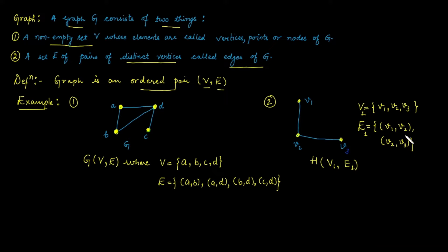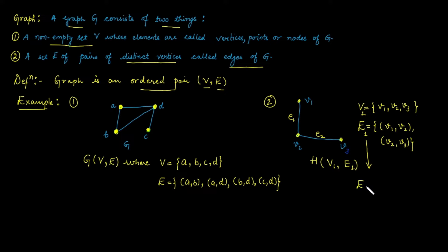Moreover, the edge set can also be represented in a second form when names are given to the edges. Suppose this edge is written as E1, and the second edge is represented as E2. In that case, our edge set is represented as {E1, E2}.